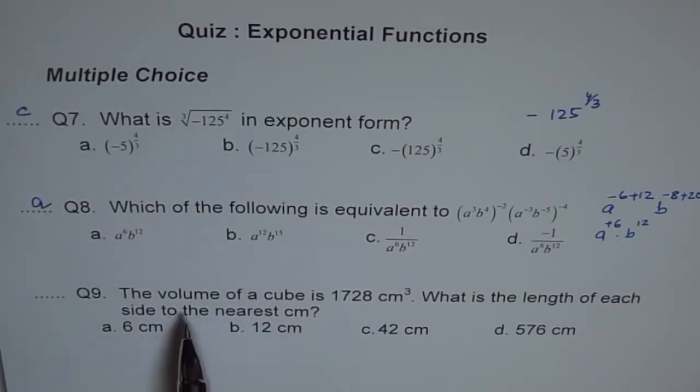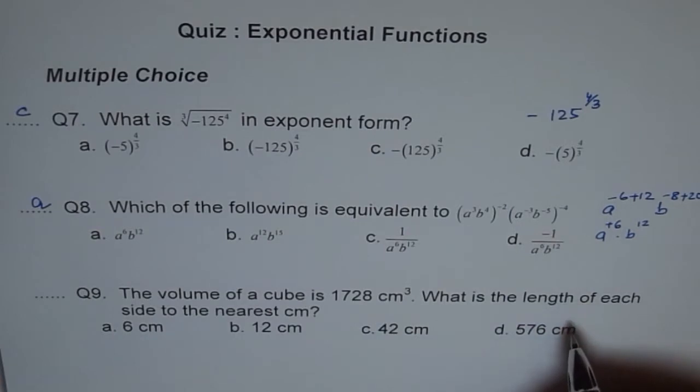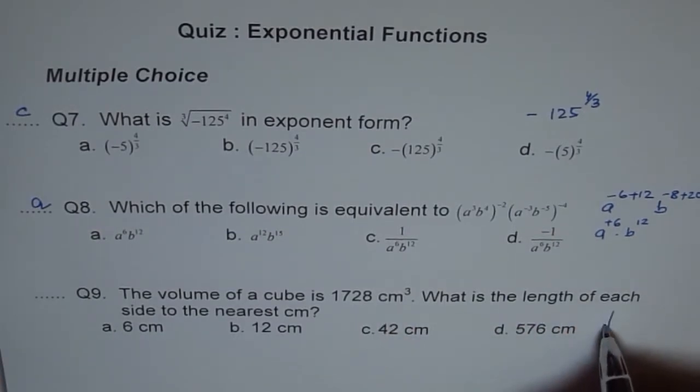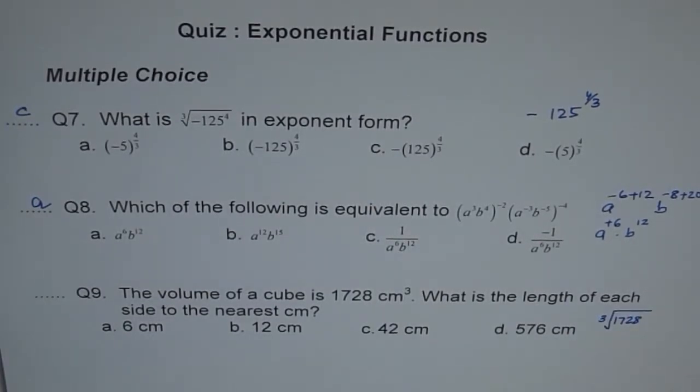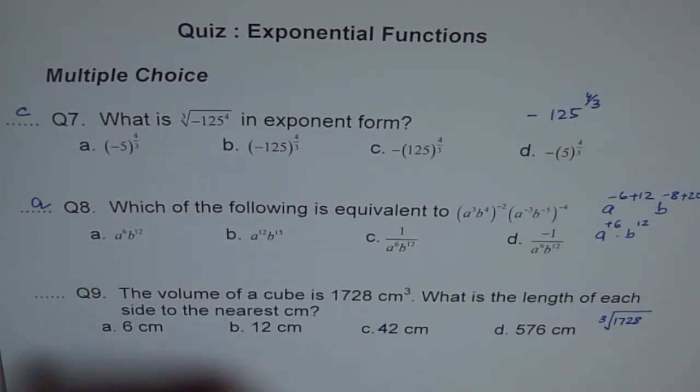Question 9. Volume of a cube is 1728 cm cube. What is the length of each side to the nearest centimeter? So each side volume, so volume is this much. So side should be cube root of 1728. So basically we have to find cube root of 1728. So you can again use your calculator and find cube root of 1728. 1728 equals to 12. So 12 is option b. So we get b as our answer.